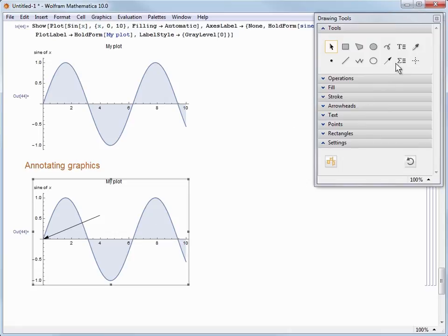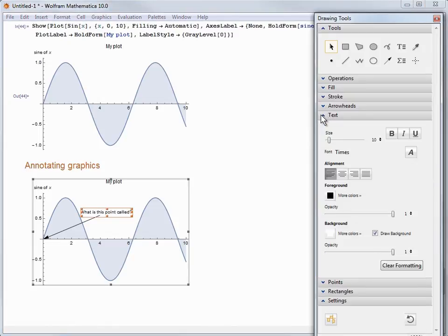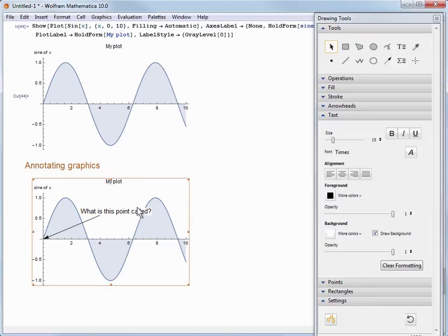Let's add some text. We do this by selecting the Text tool and then typing. So let's write, what is this point called? Now, your text may be too small like mine is, so I'm going to click to highlight it and then go to the Text section in the palette and use the slider bar to adjust the size to something more readable.